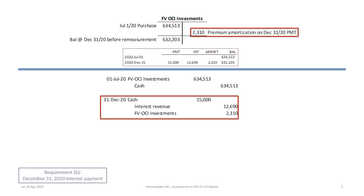Our next requirement is to record the interest payment at December 31, 2020. We'll debit cash for $15,000. Looking at the amortization table: the balance of $634,513 times the 2% effective rate gives interest of $12,690. The difference between the $15,000 payment and the $12,690 interest is the premium amortization. So we credit interest revenue $12,690 and credit FVOCI investments for $2,310. The balance after the December 31st payment and before remeasurement is $632,203.